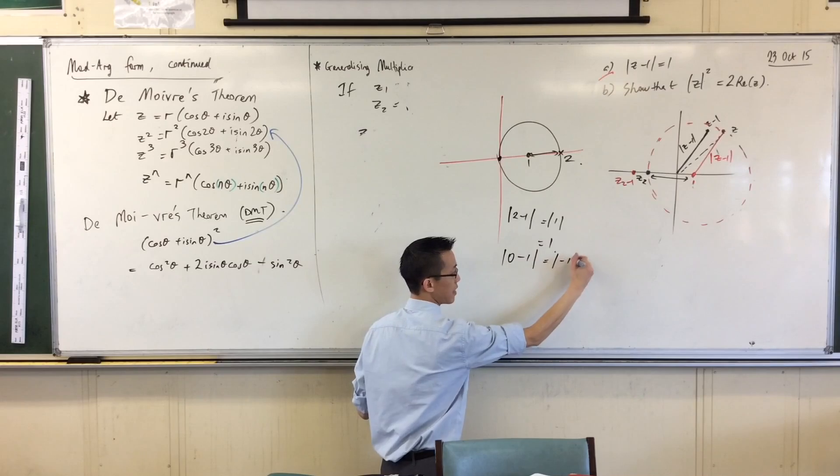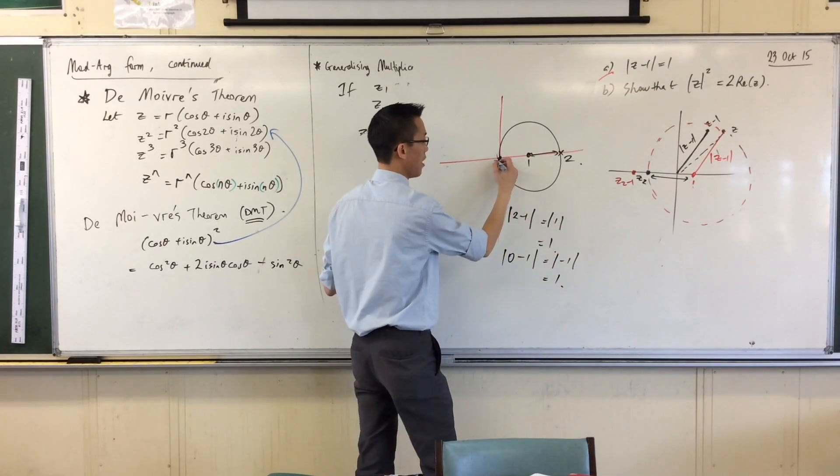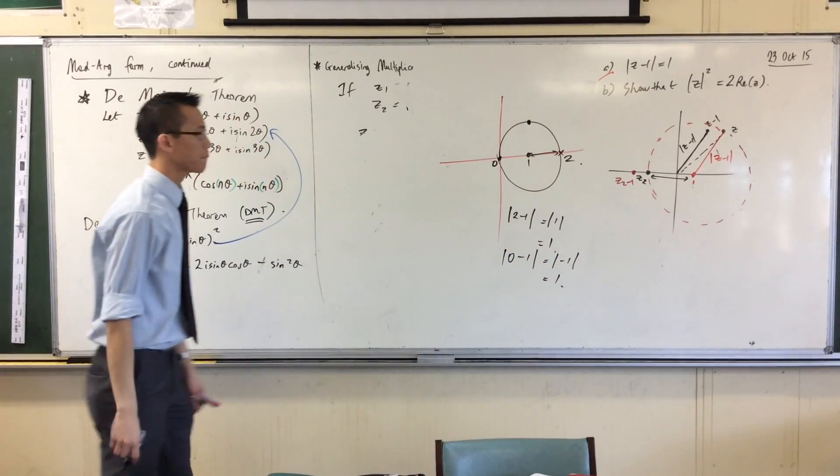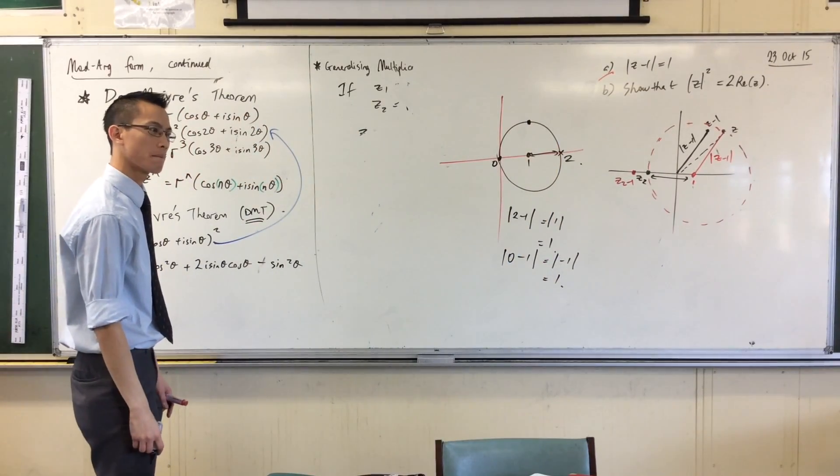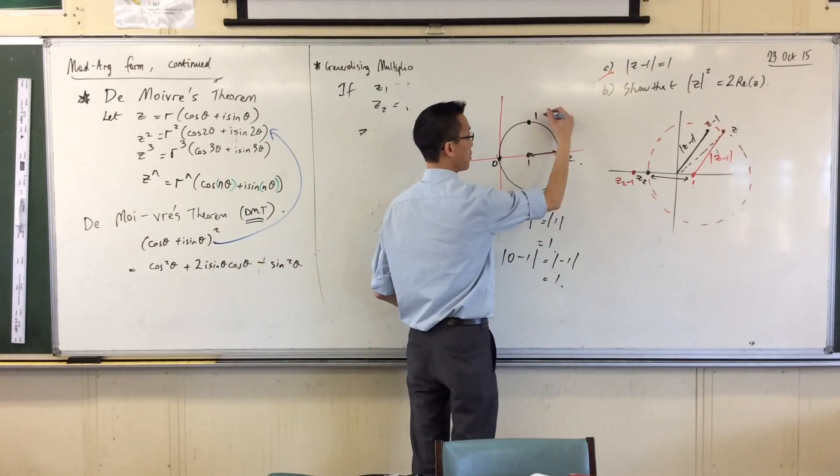Let's push a little further. I know what that point is. It's 1 plus i. So what's the modulus of 1 plus i take away 1? That's z minus 1, isn't it? Well 1 take away 1 will cancel, so I just get the modulus of i, which you bet is 1.